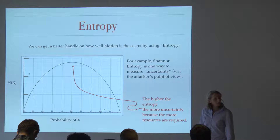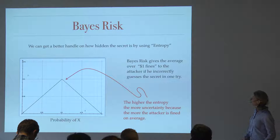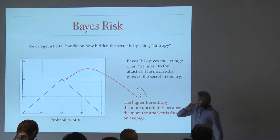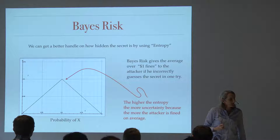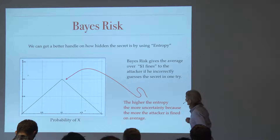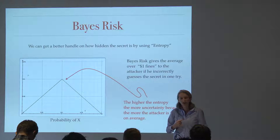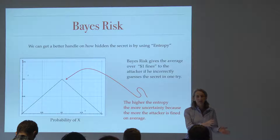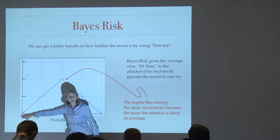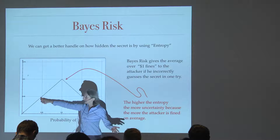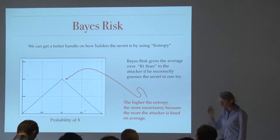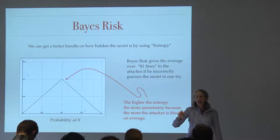Here's another idea for entropy, coming from Bayes Risk. This gives the average one-dollar fines to the attacker if he incorrectly guesses the secret. Imagine you've got a secret bit: the attacker is going to choose zero or one, and if he gets it wrong, he loses a dollar. This is really measuring the cost to the attacker of his choices of actions. On this side of the graph he's going to guess zero and get it exactly right; he'll be wrong more often as he comes to 50-50, then swap over and guess the other one. Again, higher entropy means more uncertainty, but this directly captures the idea that the attacker is trying to guess your secret.